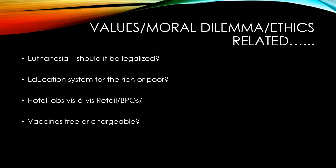We come to values and moral dilemma. Euthanasia — as I said, you can start with a definition as one of the entry or initiation points. You can explain for everybody that euthanasia means mercy killing, and then you can talk about it — should it be legalized? There are people who are absolutely in pain and have no chance of recovery, or they're just going to be in pain for the remaining time of their lives, or some people are in a vegetative state with brain death. Education system — is it for the rich or poor, pro-rich or pro-poor? Here you can talk about the Right to Education, RTE. You can talk about vaccines — free or chargeable — or public health system in India. So anything which has moral values or is a dilemma.